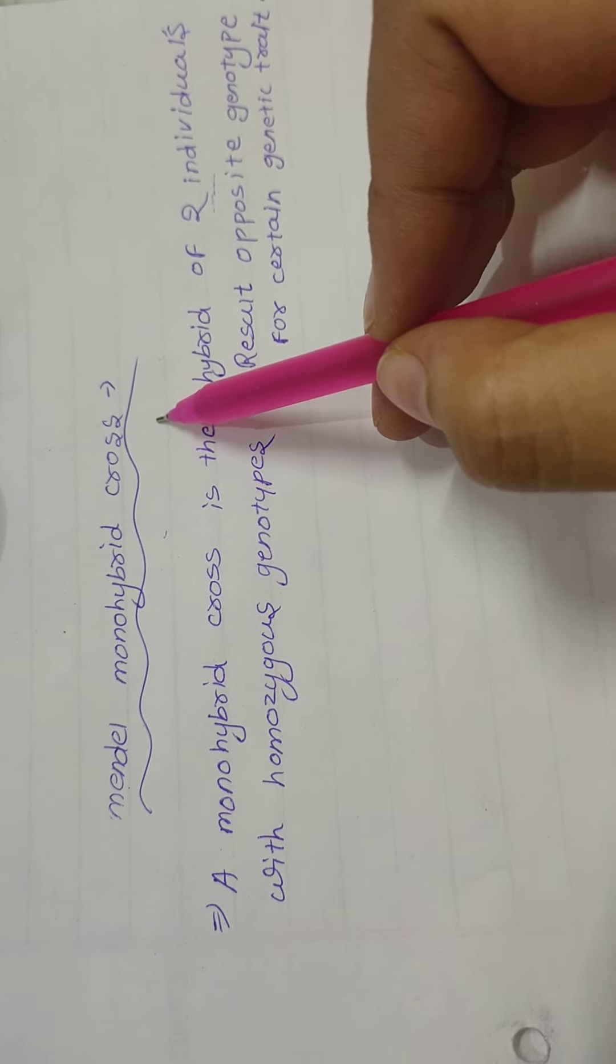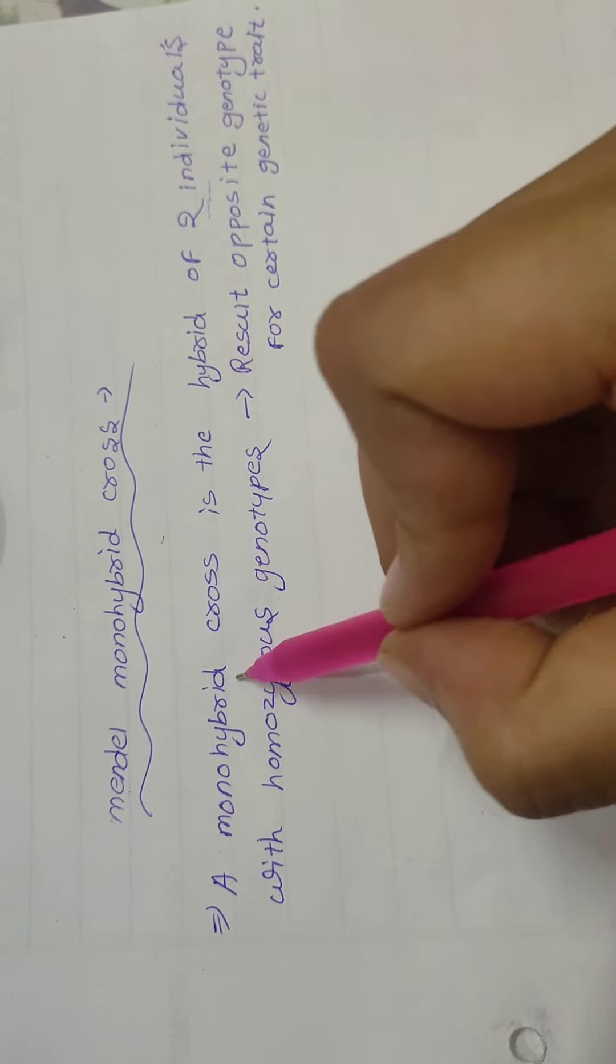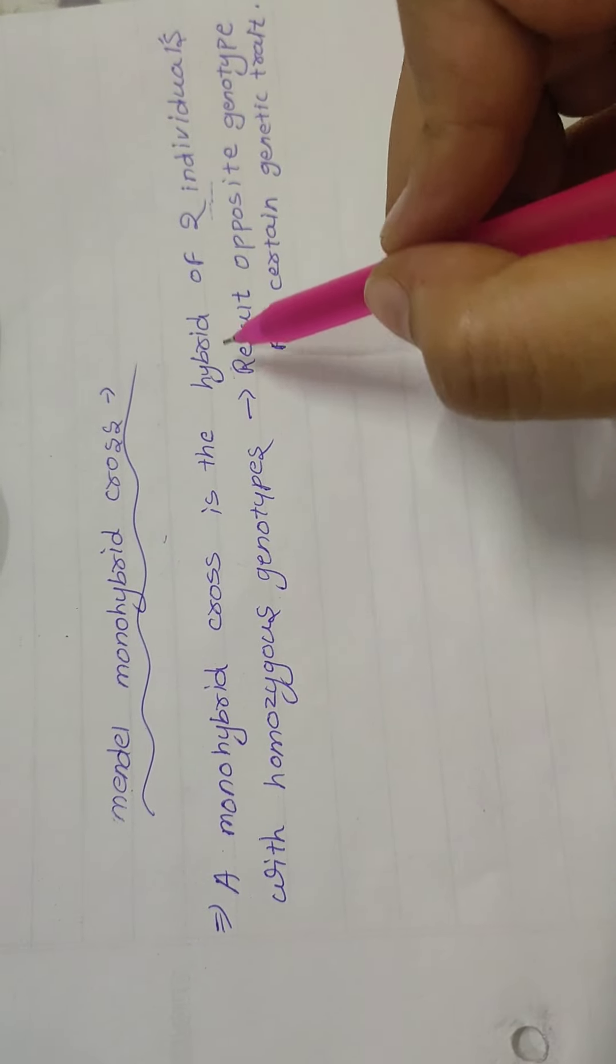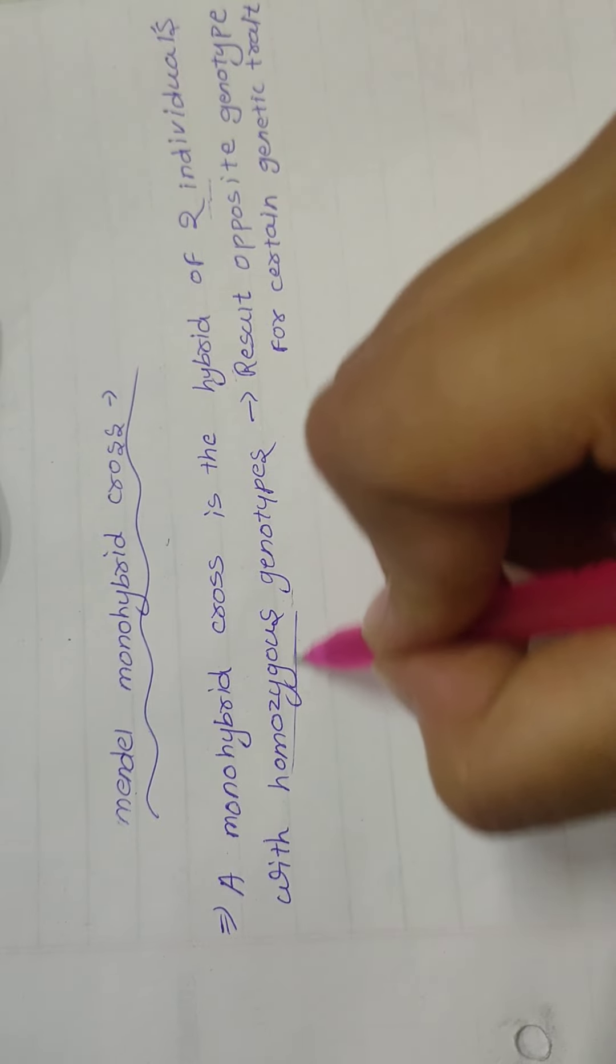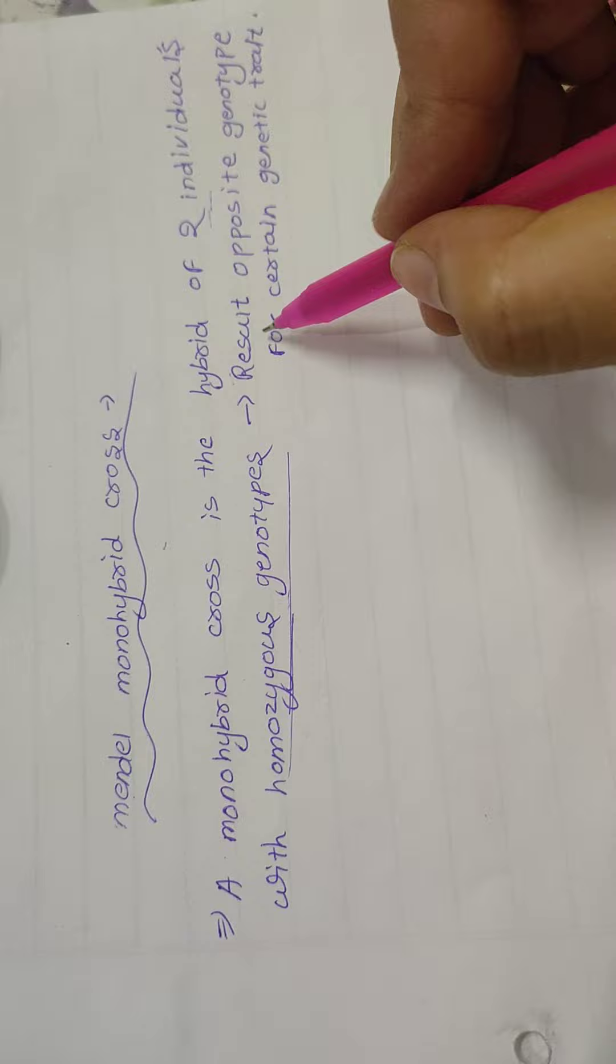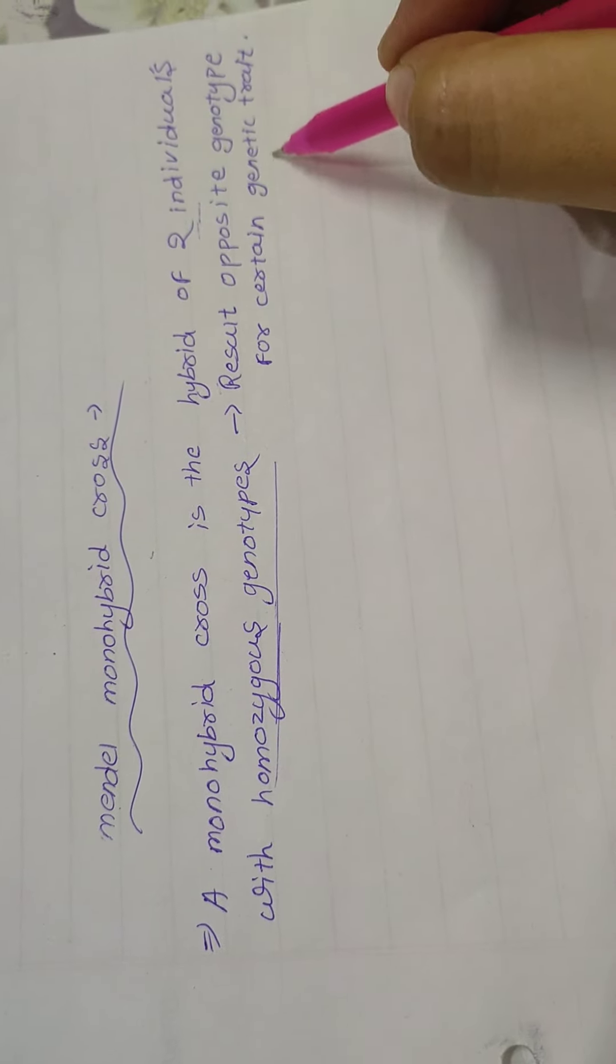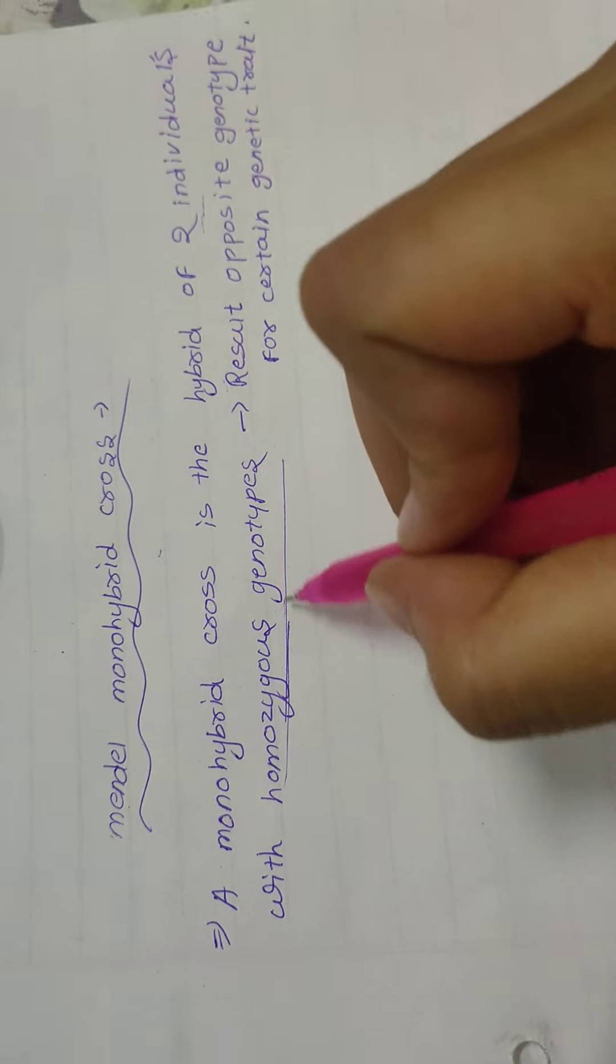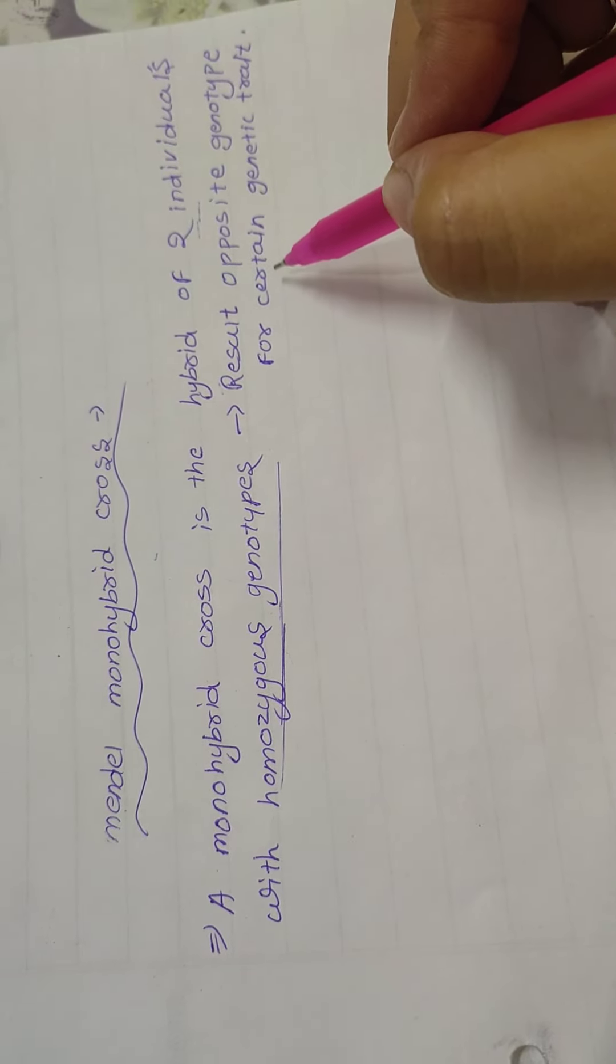Let's discuss monohybrid cross. First of all, what is monohybrid cross? Monohybrid cross is the hybrid of two individuals with homozygous genotype. Homozygous genotype means same genotypes resulting in opposite genotype for certain genetic traits. This homozygous genotype results in opposite genotype to certain traits.